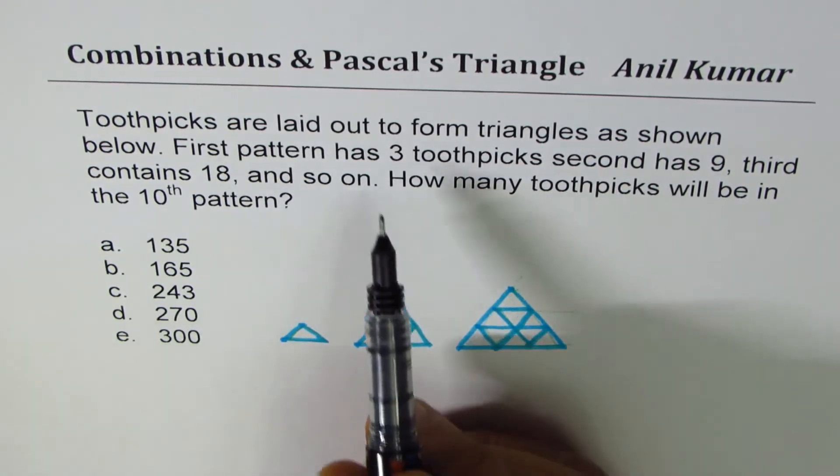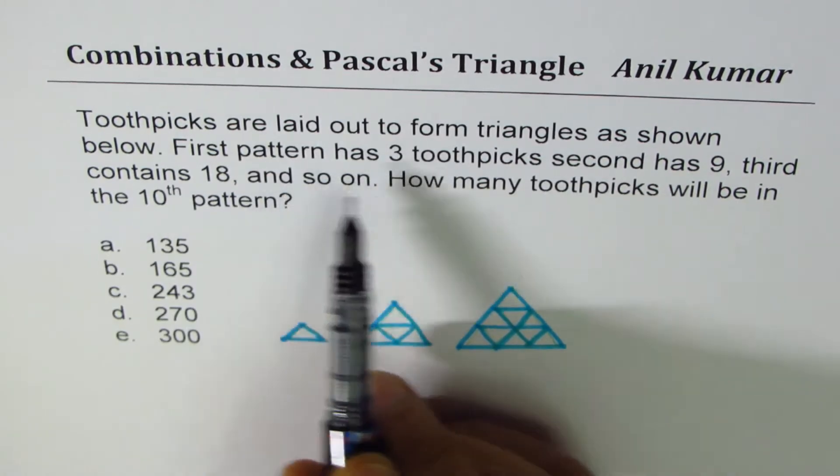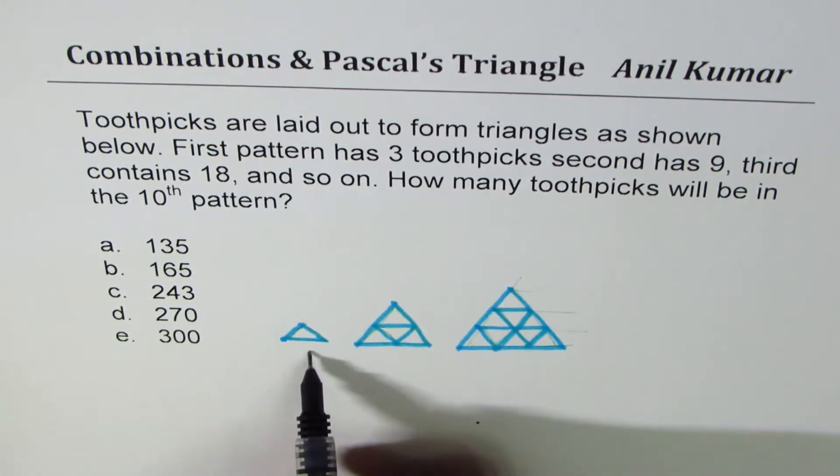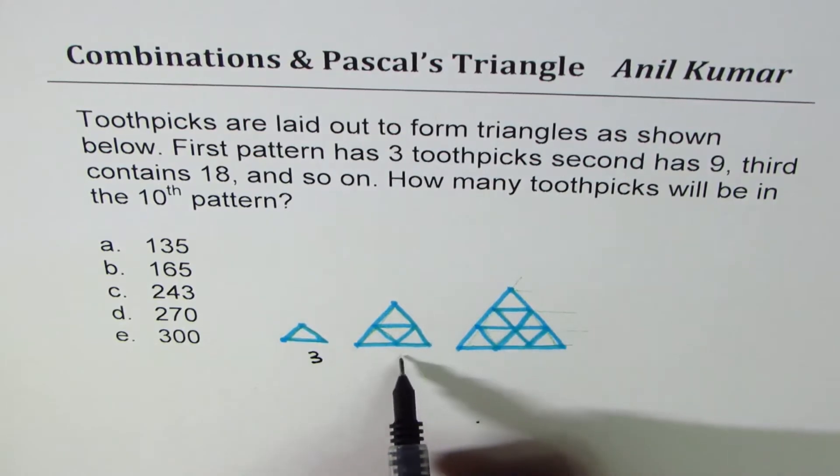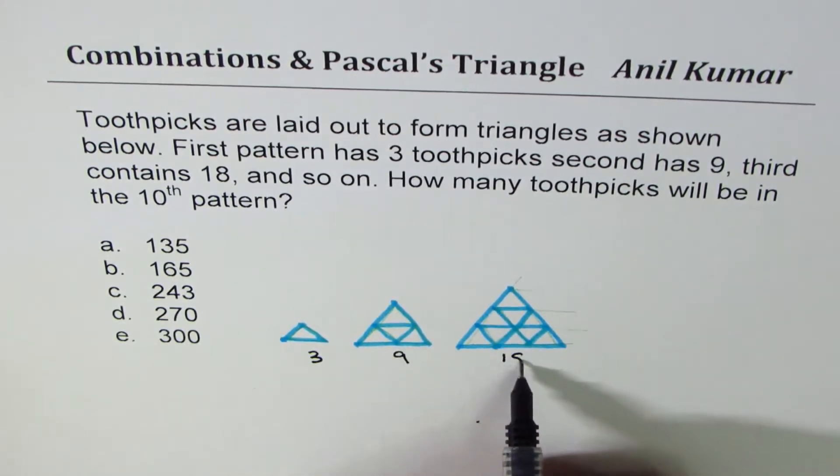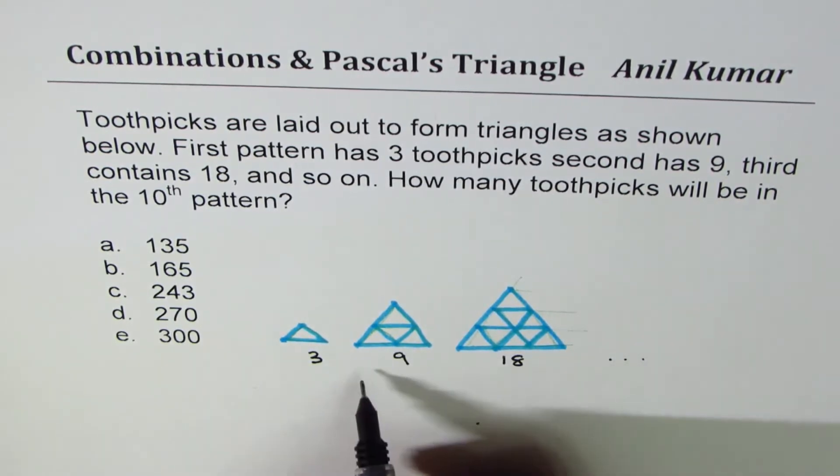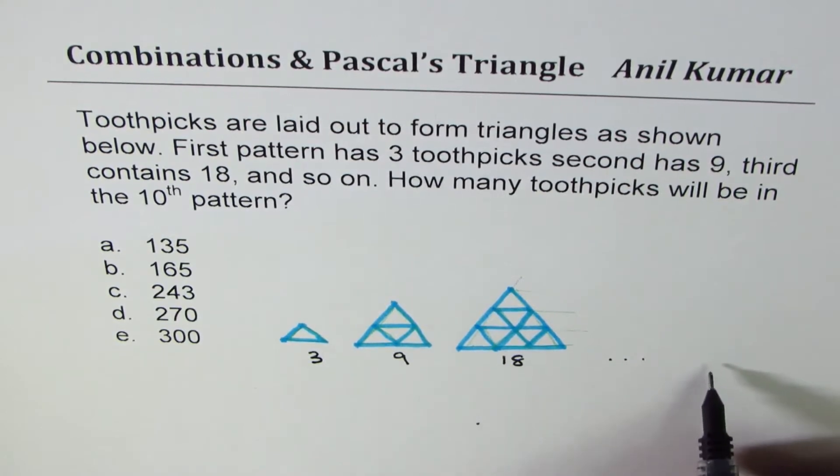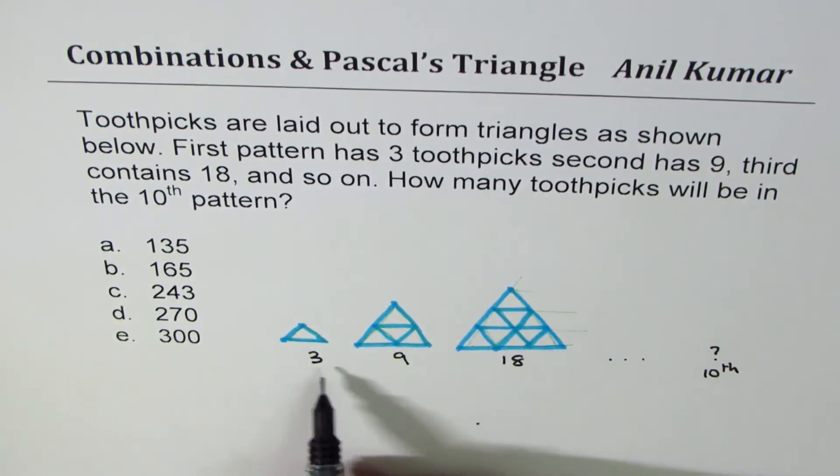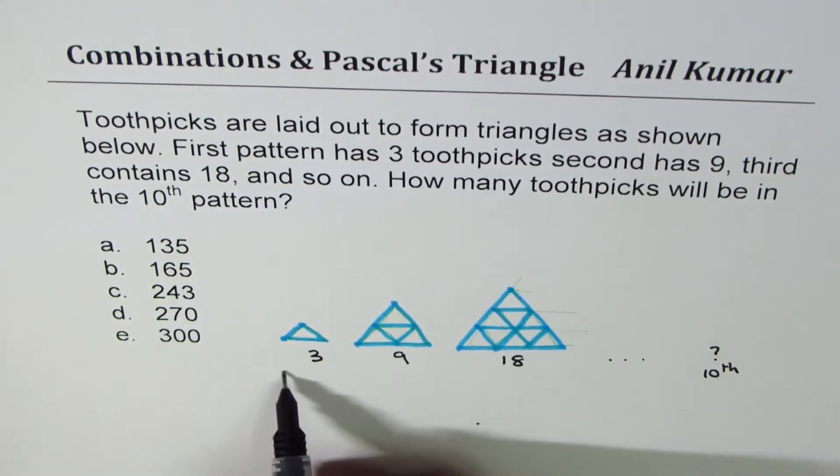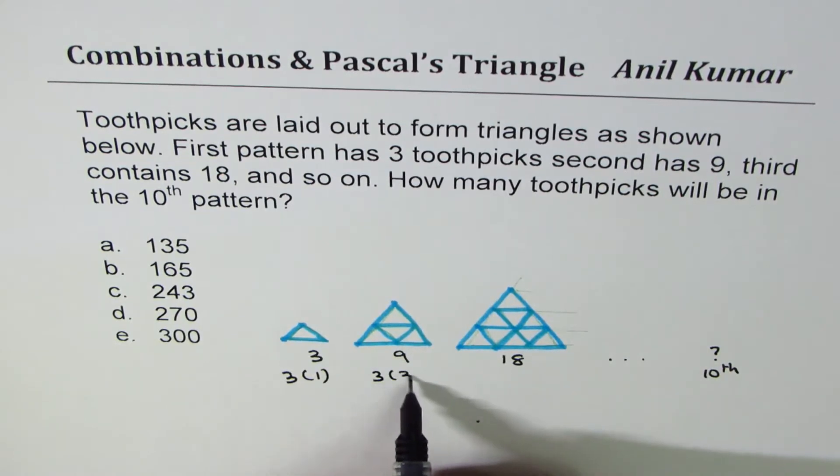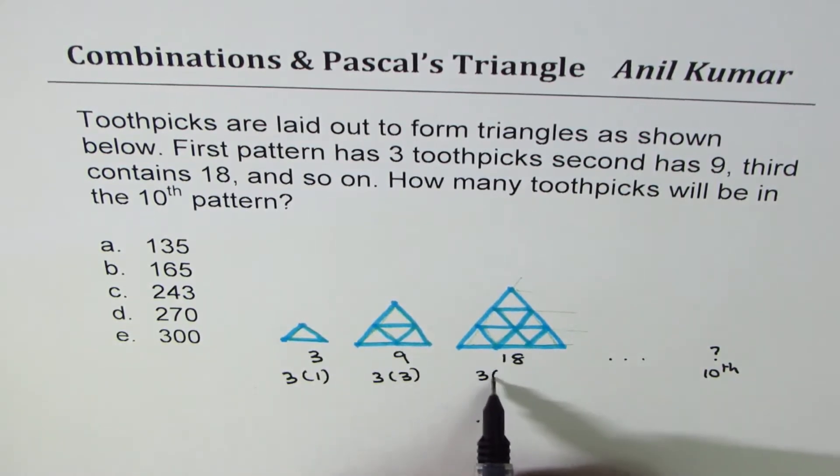Now as you are given here, we have the numbers as 3, 9 and 18. These will be multiples of 3, correct? So this is our first pattern, second pattern, third pattern. We have to find how many in the 10th. Since there are multiples of 3, we can say it is 3 times 1, 3 times 3 and 3 times 6.